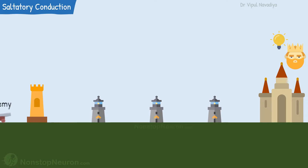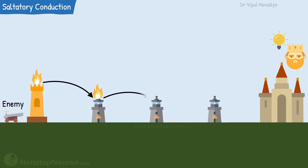Now when a guard at the border finds any threat, he doesn't send a human messenger. He simply sets a flame at the border. The guard at the first lighthouse watches that flame and sets a flame in that lighthouse. One by one, the flame is set in all the lighthouses, and with the last lighthouse, the king gets the alert.